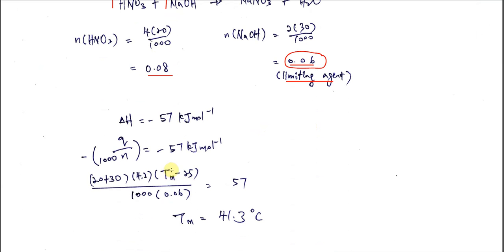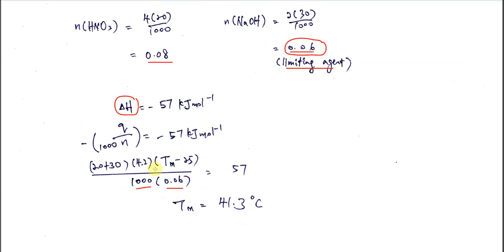Okay, after that, this is delta T. So let's say the maximum temperature is Tm, T max here, okay, minus 25. 25 is the initial temperature, means before the reaction, okay, so over 1000 times 0.06, this is the mole of limiting agent. Okay, so remember this is very important, so whenever you try to calculate delta H using the Q and the mole, it must be negative. So negative negative both now become positive.